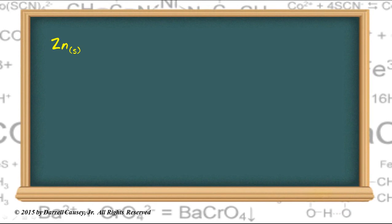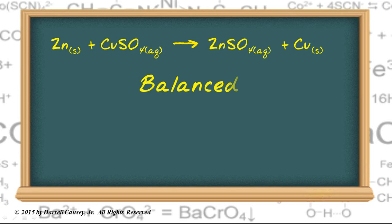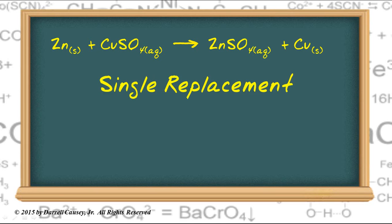And so let's go to the board and write that equation out. So we have zinc solid and copper 2 sulfate aqueous. And that's going to give us zinc sulfate in aqueous solution and copper solid. And that's already balanced. And it's a single replacement reaction.